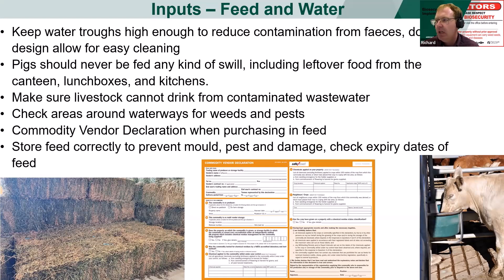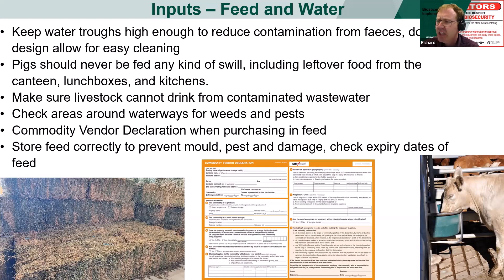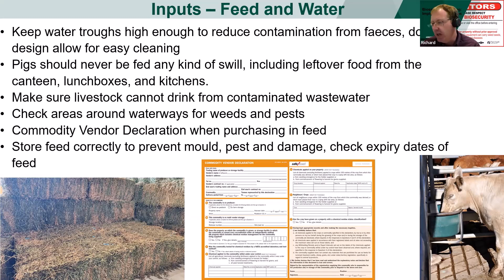Make sure livestock cannot drink from contaminated wastewater — if you've got effluent ponds, storm drains, or any channels, make sure they can't drink from that as it does pose a health risk. Check areas around waterways for weeds and pests; often around waterways you'll see weeds coming up, particularly after minor flooding events, and it's a lot easier to stop them around your waterways before they spread across your property.